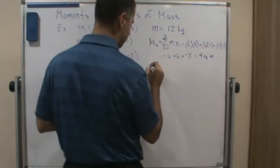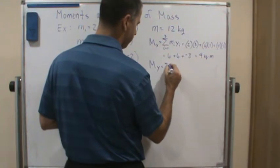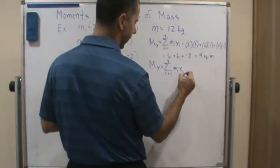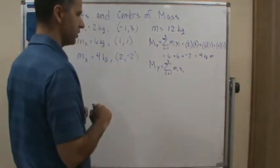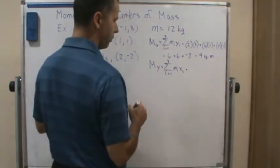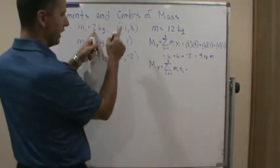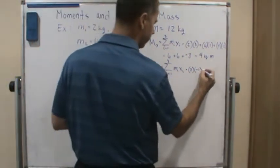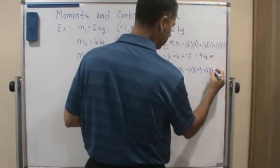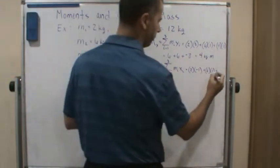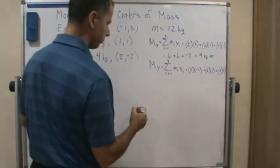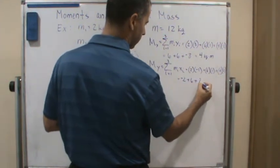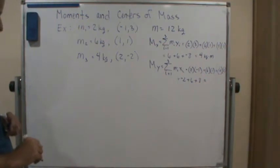Okay, now m sub y. Similarly, i equals 1 to 3, m sub i times x sub i. So it's with respect to the y axis, so we're going to be using x coordinates. And so again, similarly, this is going to be equal to the masses times the x coordinates. So this is going to be 2 times negative 1 plus 6 times 1 plus 4 times 2. And so this is going to equal negative 2 plus 6 plus 8, which is going to equal 12.